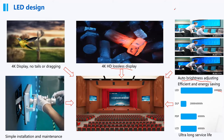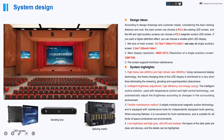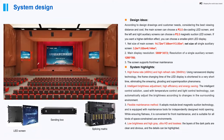Resuming the LED design: according to the design drawings and customer needs, considering the best viewing distance and cost, we normally choose the P2.5 LED screen for the main screen. It must be a die-casting LED structure because it's very large and the structure needs to be strong enough to support all the weight of the LED screen. For the smaller screens, we apply a magnetic-structure LED screen. Both support front maintenance, which is very simple.